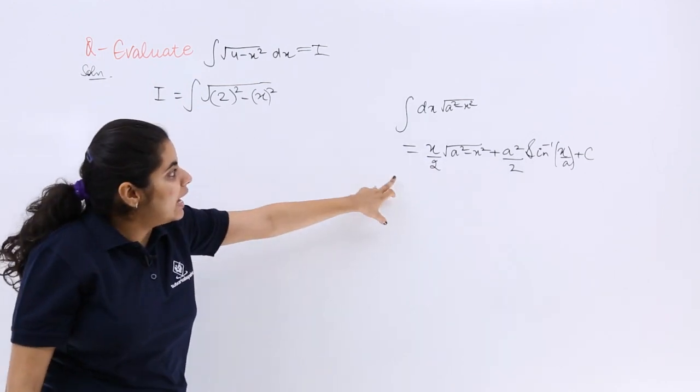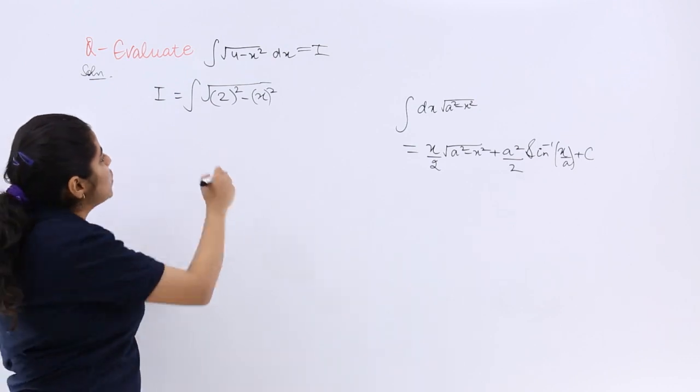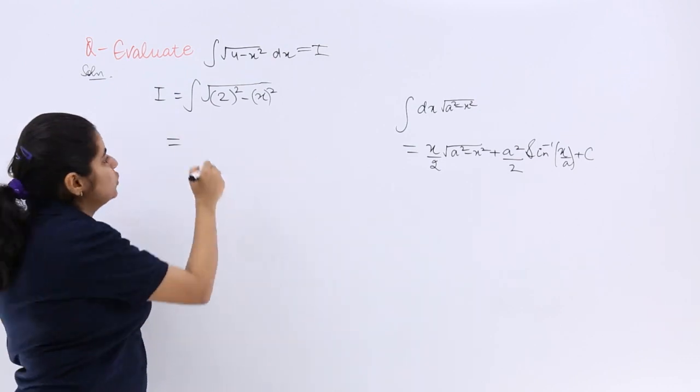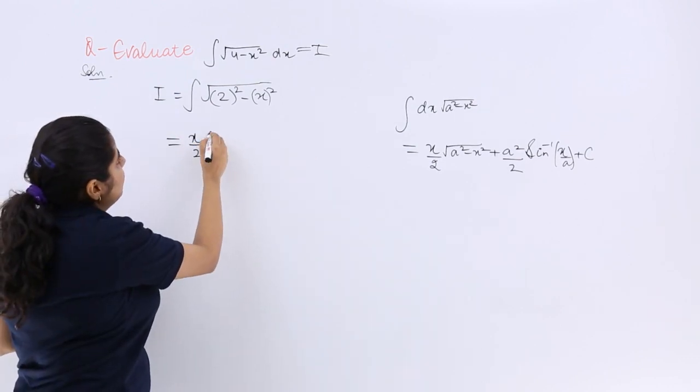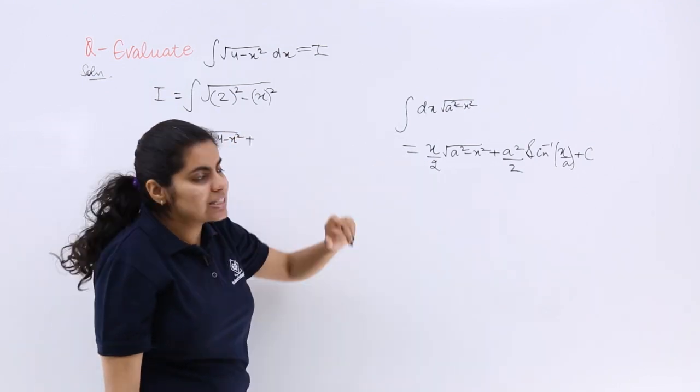That formula I am going to use and that can be used because in the numerator I have the same form. So it is x by 2 under root a square minus x square plus a square by 2.